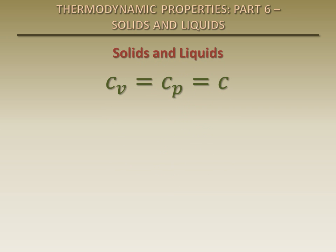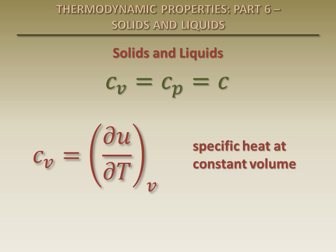Recall that the specific heat at constant volume can be expressed as the derivative of the specific internal energy with respect to temperature. Like those of ideal gases, the specific heats of incompressible substances depend on temperature only. So the partial derivative can be replaced with an ordinary derivative.